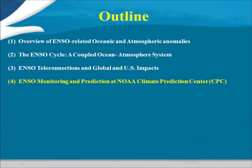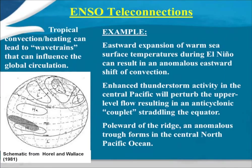So here's teleconnections. I really like this schematic — it shows very clearly how tropical convection can lead to a global wave train or ENSO teleconnection. The gray shaded region represents convection and rainfall expanding eastward. As a result of this enhanced convection, you perturb the tropical circulation in a way that produces increased upper-level divergence. That divergence takes on a rightward curl in the northern hemisphere, setting up an anticyclone in the subtropics.